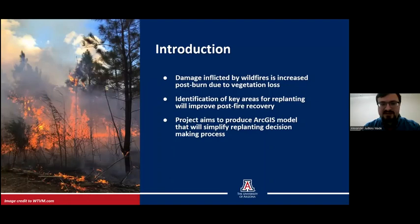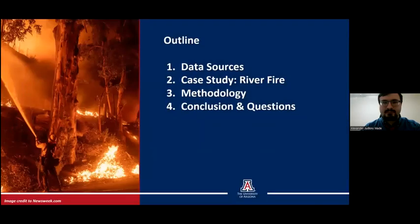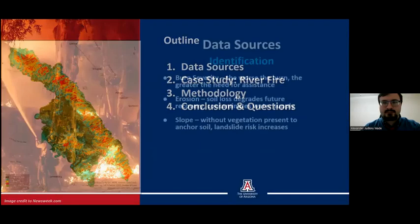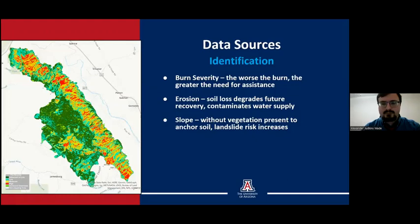The aim of this project is the production of a GIS model that will simplify the replanting prioritization process for decision makers by processing relevant data into a layer that includes both the polygons describing critical zones and replanting suggestions for those zones. I will first discuss the data sources used by the model before covering its methodology with the help of the River Fire case study. Conclusions and an opportunity for questions will follow.